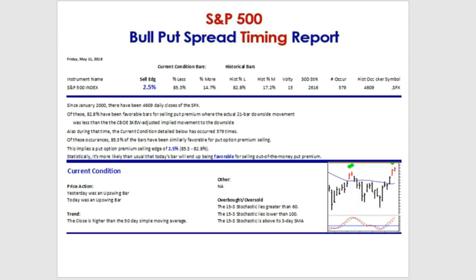Now, let's take a look at our market condition. We've had 579 occurrences. Of those, 85.3% were favorable for selling put premium like that — implying an edge of 2.5% (85.3% versus 82.8%). Statistically, it's more likely than usual that this market condition will end up being a favorable one for selling out-of-the-money put premium.